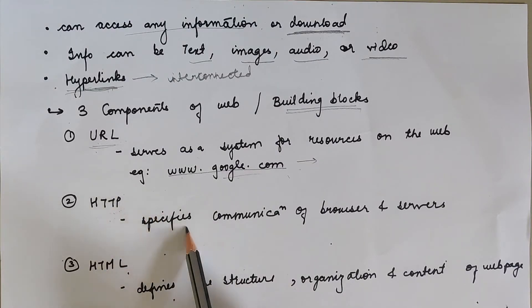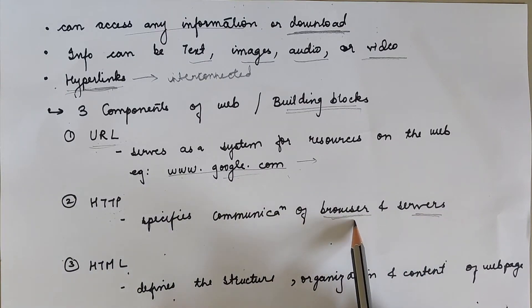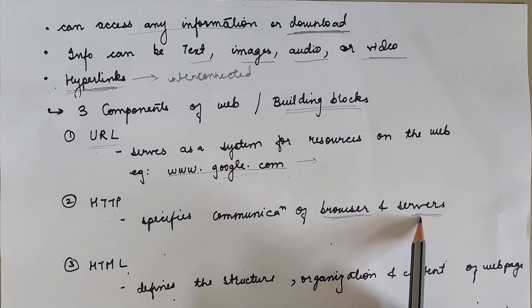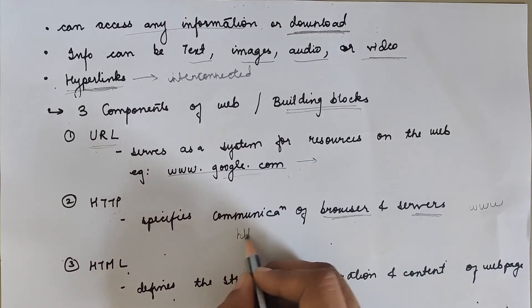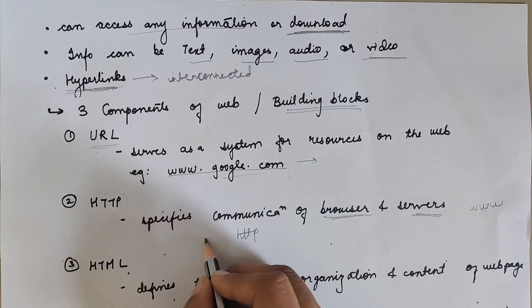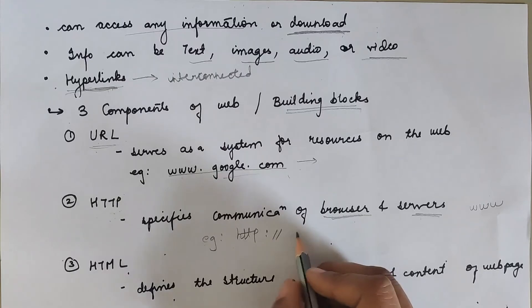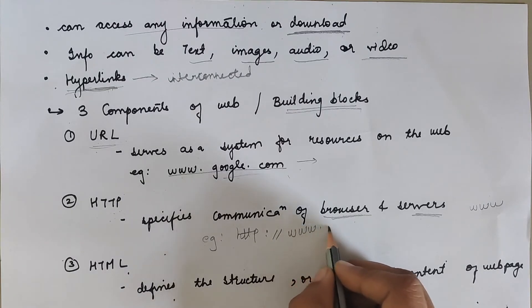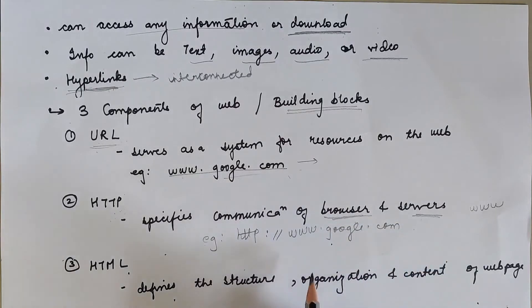The next building block is HTTP — Hypertext Transfer Protocol. It is used for communication between the browser and a server, that is, communication between the client and the server. It is mainly used to access data on the WWW. For example, you use 'http://' followed by the URL of that particular address.